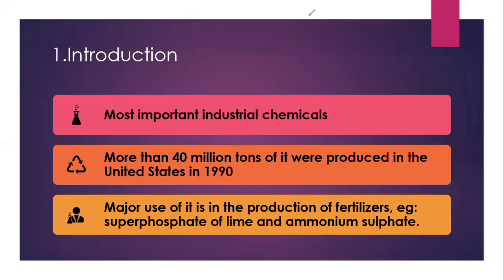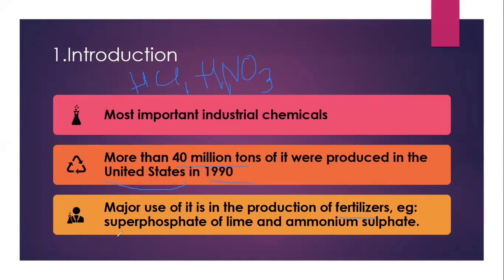Introduction to Sulfuric Acid. Sulfuric Acid is one of the most important industrial chemical compounds, used in the manufacturing of HCl (hydrochloric acid), nitric acid (HNO₃), and many sulfate salts. In 1990, more than 40 million tons of Sulfuric Acid was manufactured in the United States of America. The major use of Sulfuric Acid is in fertilizers, that is superphosphate of lime and ammonium sulfate.